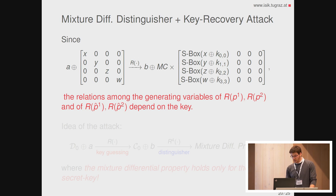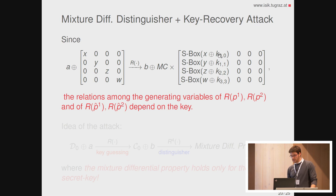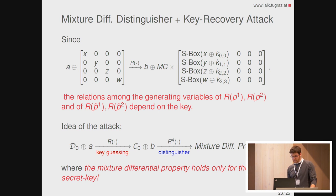Now let's try to set up a key recovery attack on five rounds of AES. It is very simple — just extend the distinguisher by one round at the beginning. We start with pairs of plaintexts with one active diagonal and compute one round of encryption. After one round, the generating variables depend on the secret key, so we cannot work independently of the secret key. But we can exploit this to set up a key recovery attack: guess the key in the first round and then use the distinguisher on the next four rounds to filter the wrong keys.